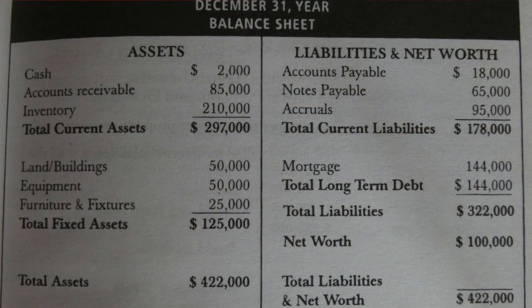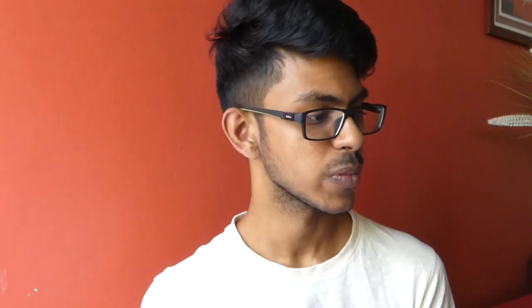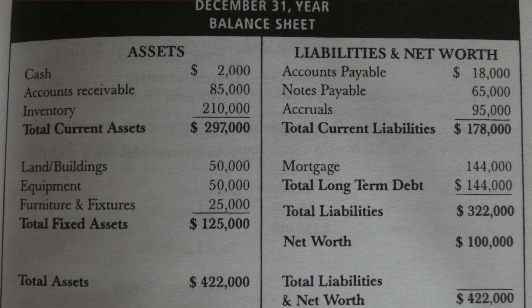The total current liabilities is $178,000. For long-term liabilities, they have a mortgage of $144,000, making total liabilities $322,000. Net worth is the difference between assets and liabilities: $422,000 minus $322,000 equals $100,000. Net worth is what remains for the owners and stakeholders after all expenses are covered. Total assets equals total liabilities plus net worth — the equation balances at $422,000.